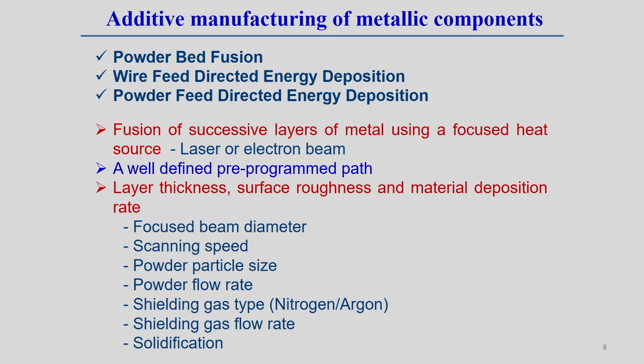For additive manufacturing of metallic components, two main categories exist: powder bed fusion, and directed energy deposition. In directed energy deposition, the wire can be used as feedstock material (wire feed DED) or powder can be used as raw material (powder feed DED). In powder feed DED, the laser light and powder are focused at the same position simultaneously.